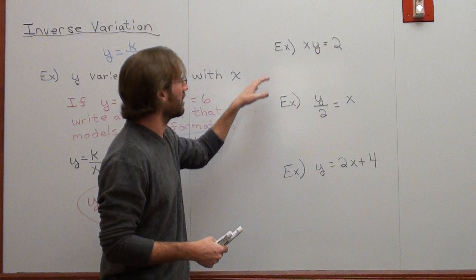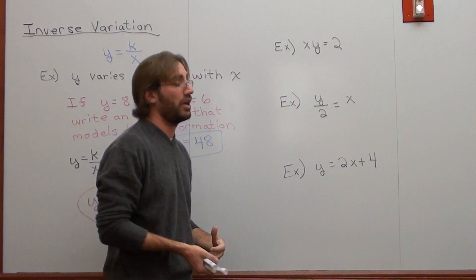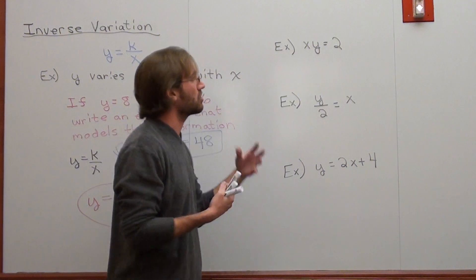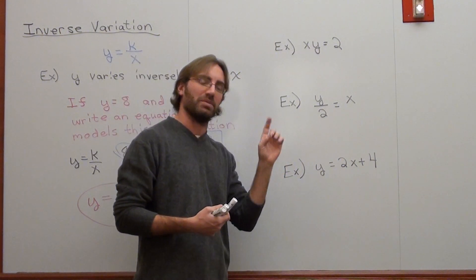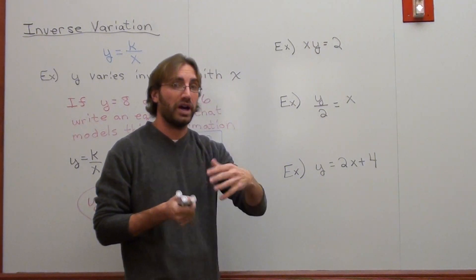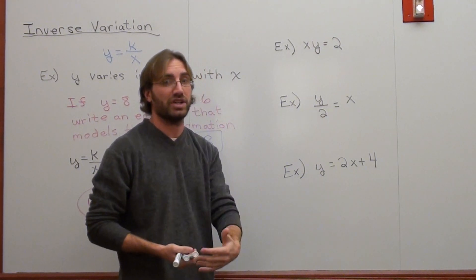So I put up three examples right here on what could be inverse variation or what might not be inverse variation. And what you have to realize is you have to solve for y. Get y by itself. And as long as it works under the form y equals k over x, it's an inverse variation.